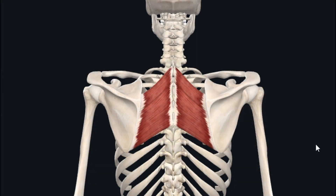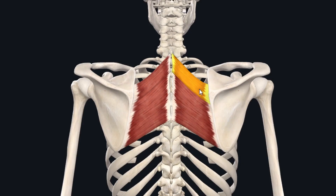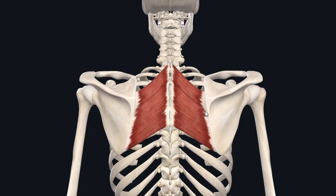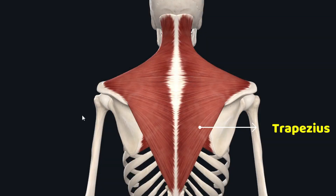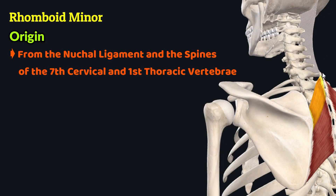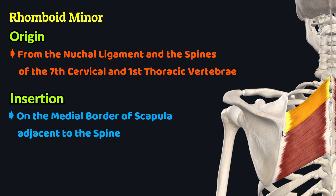The rhomboid muscles are two superficial extrinsic muscles of the back: the rhomboid minor superiorly and the rhomboid major just inferior to it. These muscles connect the medial border of the scapula to the vertebral column, holding the scapula to the thoracic wall, and lie deep to the trapezius. The rhomboid minor originates from the nuchal ligament and the spines of the seventh cervical and first thoracic vertebrae, with its fibers traveling inferolaterally to insert on the medial border of the scapula adjacent to the spine of the scapula.